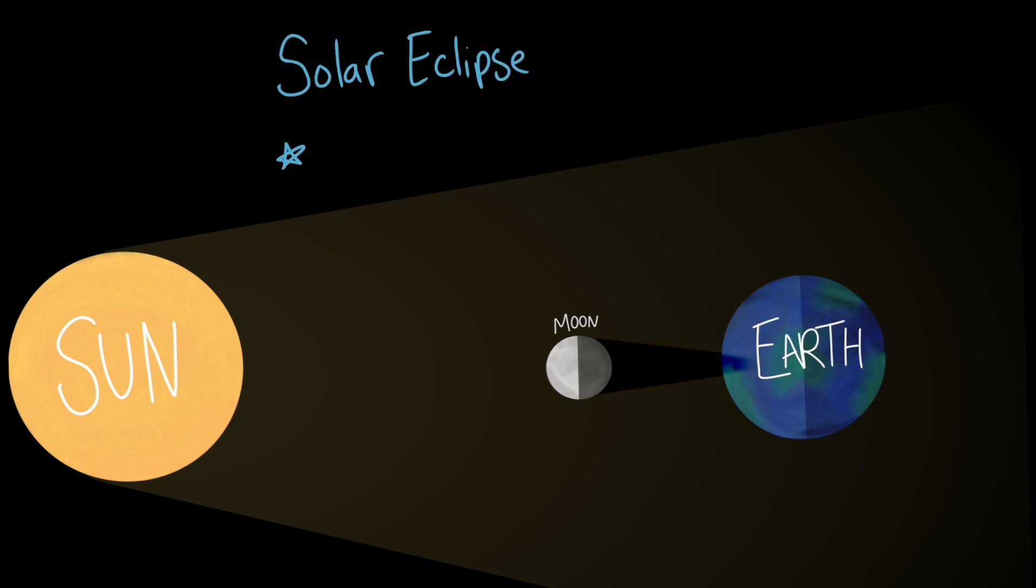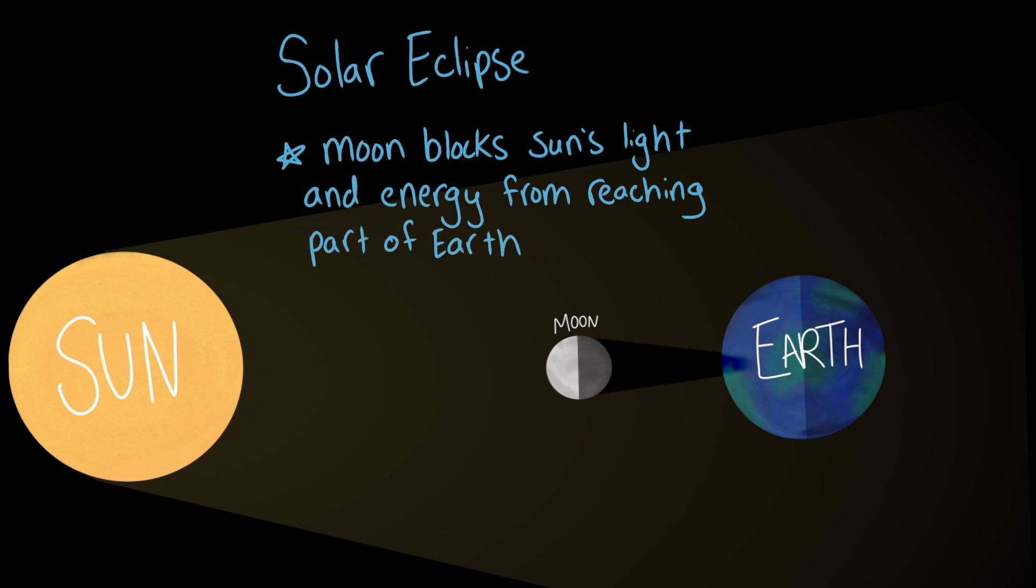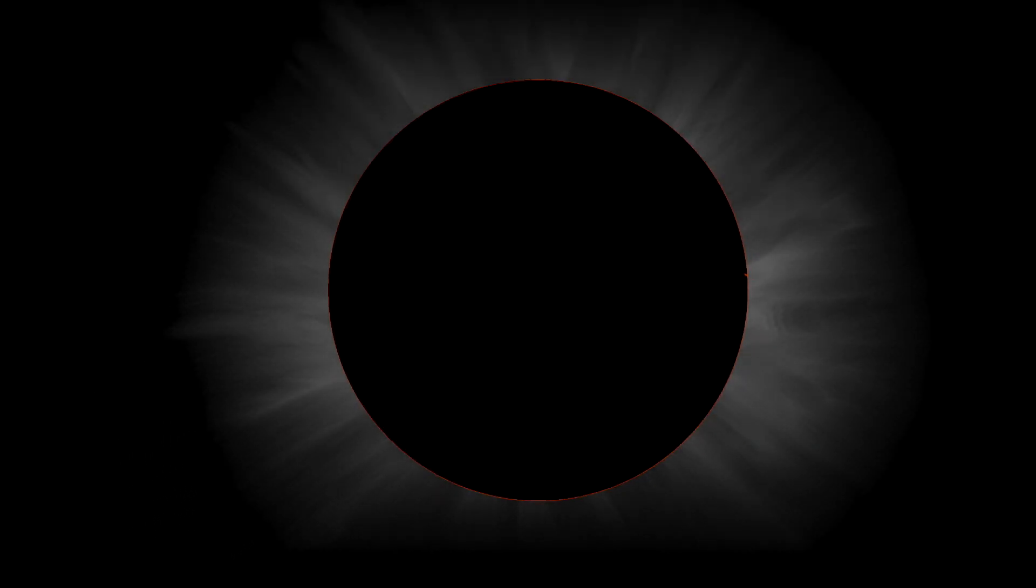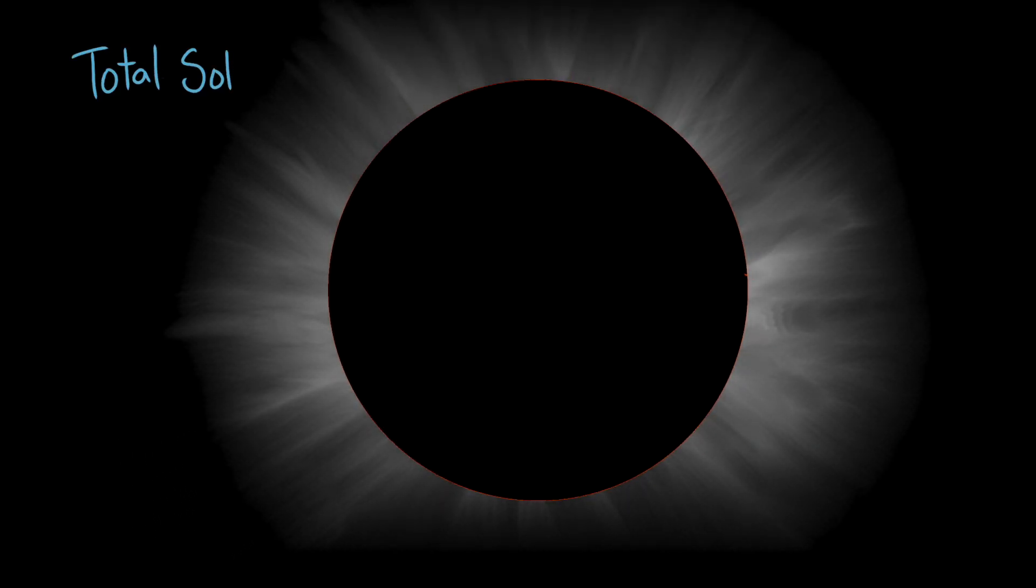During a solar eclipse, the moon blocks the sun's light and energy from reaching part of Earth. So how does a solar eclipse appear from Earth? Well, if you're standing in the center of the moon's shadow, you'd see the moon appear to completely cover the sun's disk. This is called a total solar eclipse.